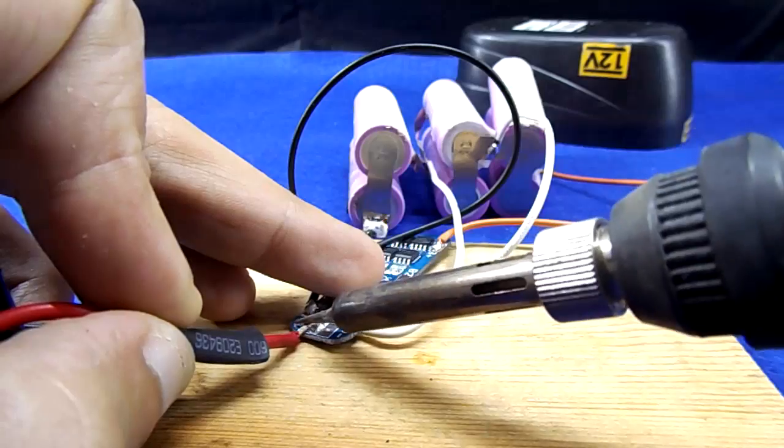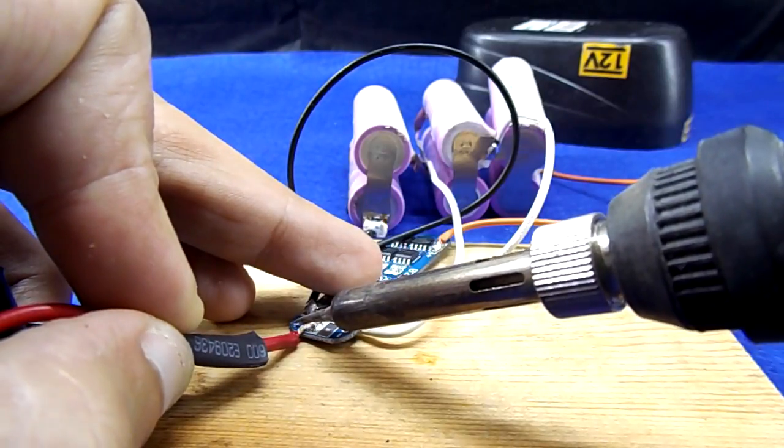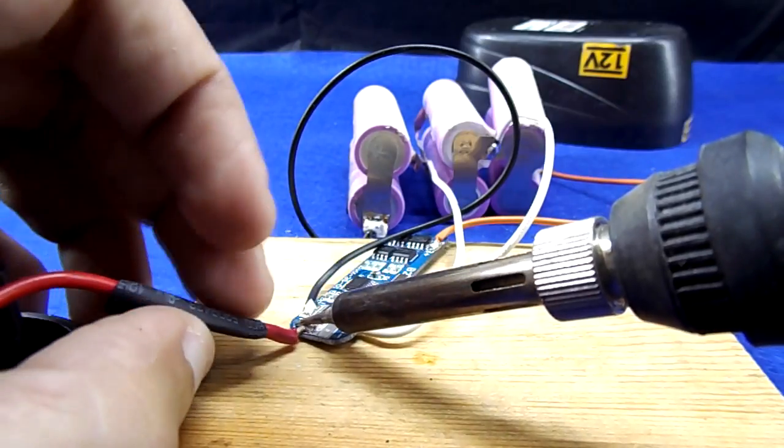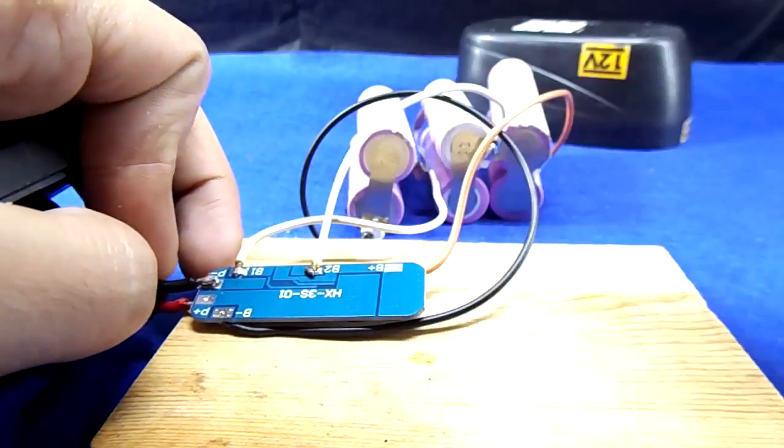Now I'm going to solder the red wire of the battery enclosure to B plus and black wire to B minus from the other side for safety.